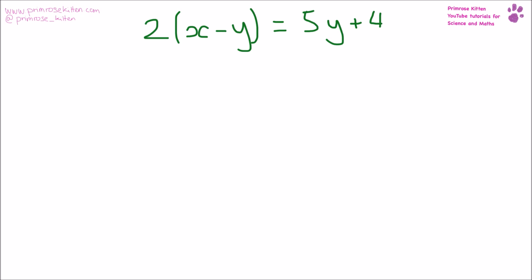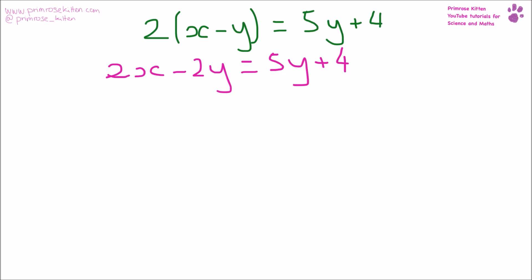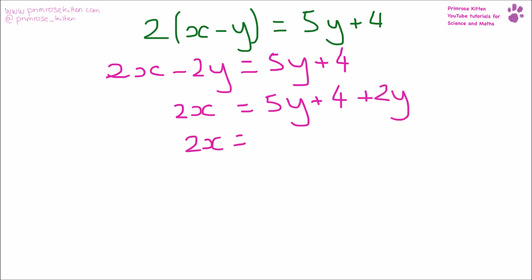Again, we want to make x the subject of the formula. The first thing I'm going to do is multiply out the brackets. 2x − (−2y) = 5y + 4. I'm going to take the bit that isn't x over to the other side, so 2x = 5y + 4 + 2y. I'm going to tidy that up: 2x = 7y + 4. Because x is the quantity times by 2, I'm just going to divide everything by 2. So x = (7y + 4) over 2.